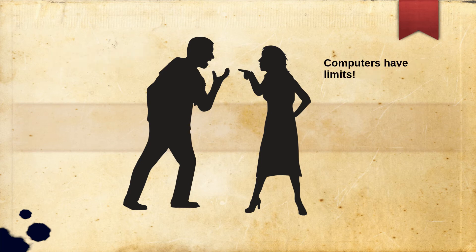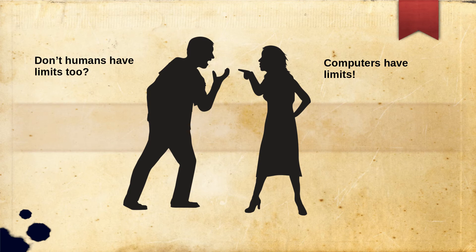Objection 3: Digital computers can't save every possible scenario and respond like a human. Turing acknowledges that there are limitations to the capabilities of digital computers, but there are also limitations to humans. And a computer can cover a huge number of possibilities with a small amount of memory, unlike humans.